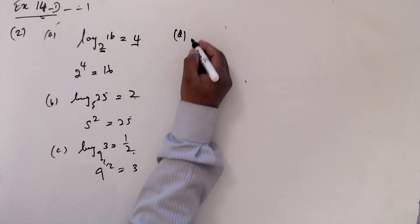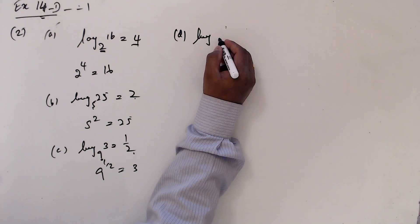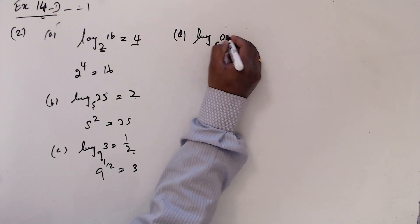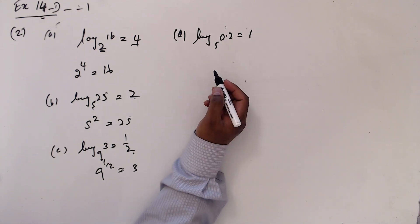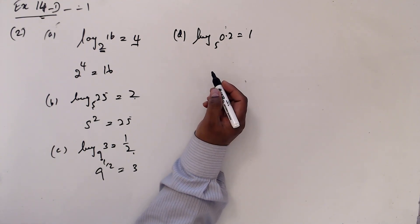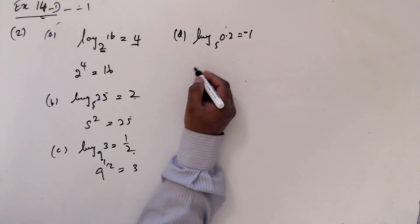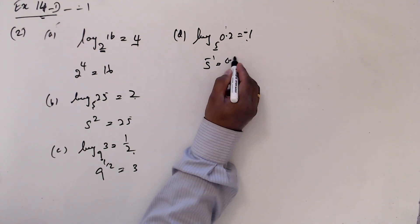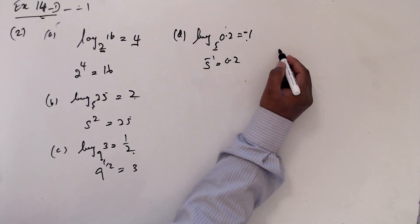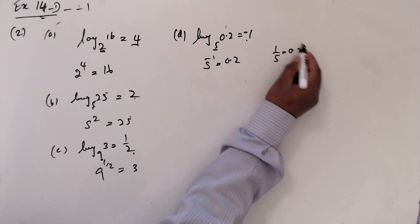And D: log base 5 of 0.2 is minus 1. So this is minus 1 — this is base and this is power. 5 to the power minus 1 is 0.2. D: 5 to the power minus 1 is 1 over 5. Divide — when you divide, you will get 0.2.